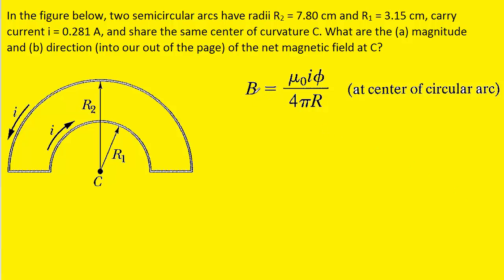In this equation we have the magnetic field equaling a constant multiplied by the current multiplied by the angle in radians of your circular arc. Now, we can see that both circular arcs are semi-circles, and so the angle would be 180 degrees. However, when you plug an angle into this equation, you want to make sure that it's in radians. So, for both of these circular arcs we're going to use not 180 degrees, but its value in radians, which of course is pi. So, that will be the value for the angle phi in this equation. And then we're dividing by 4 pi times the radius of the circular arc.